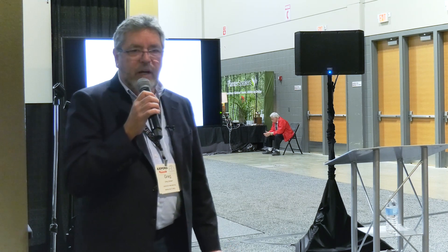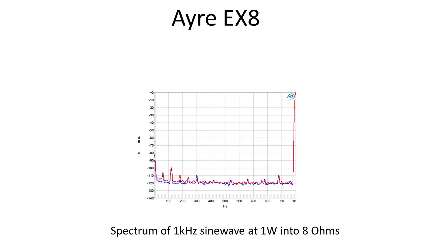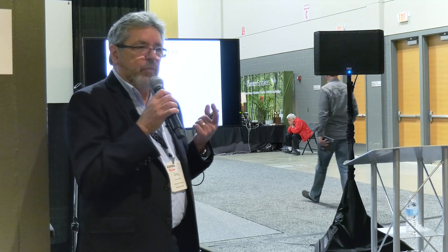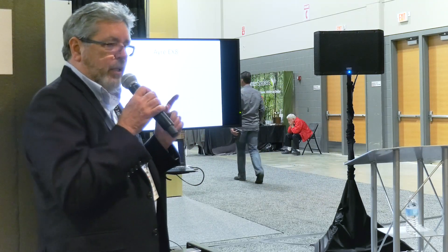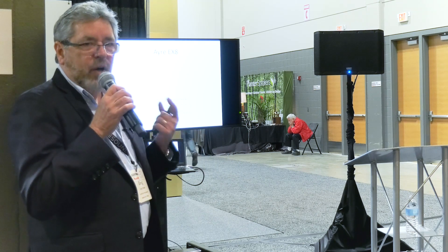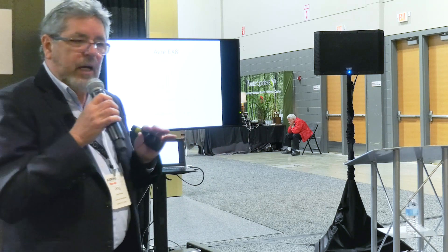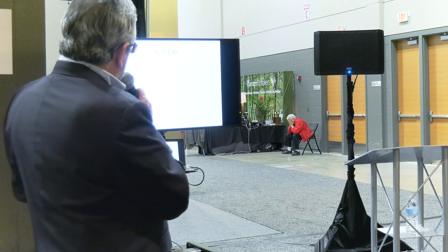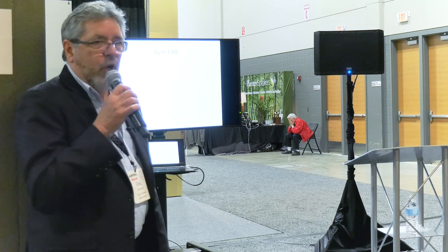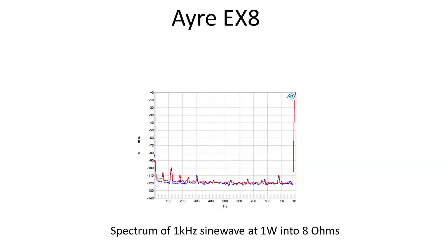This is the Air EX-8, a 100-watt-per-channel solid-state Class AB amplifier. Air uses no global negative feedback — their philosophy is to try to get the best performance possible without using a lot of negative feedback. You can see it's also very clean, all below 100 decibels. It's a little bit more spiky than the M32, but still very clean.